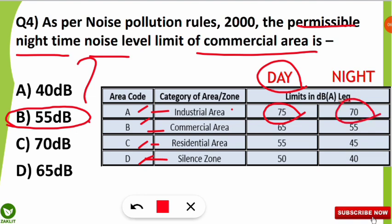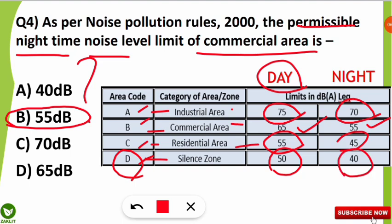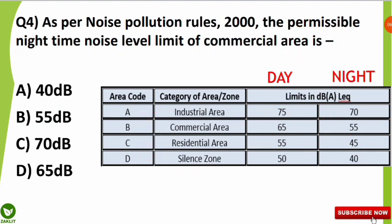During nighttime, the industrial area limit is 70 decibels. For commercial area: daytime limit is 65 decibels, nighttime is 55 decibels. For residential area: daytime limit is 55 decibels, nighttime is 45 decibels. For silence zone (area code D): daytime limit is 50 decibels and nighttime is 40 decibels. These are important — kindly note them down.